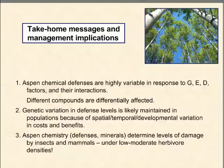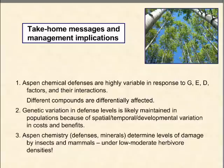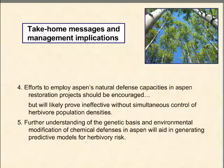Some take-home messages: Aspen chemical defenses are highly variable in response to various genetic, environmental, and developmental factors and interactions thereof. Different compounds are differentially affected — tannins and phenolic glycosides are not uniformly affected in the same way. Genetic variation in defense levels is likely maintained in populations because of spatial, temporal, and developmental variation in their costs and benefits. Aspen chemistry will determine levels of damage by insects and mammals primarily under low to moderate herbivore densities — under very high densities, everything gets eaten.